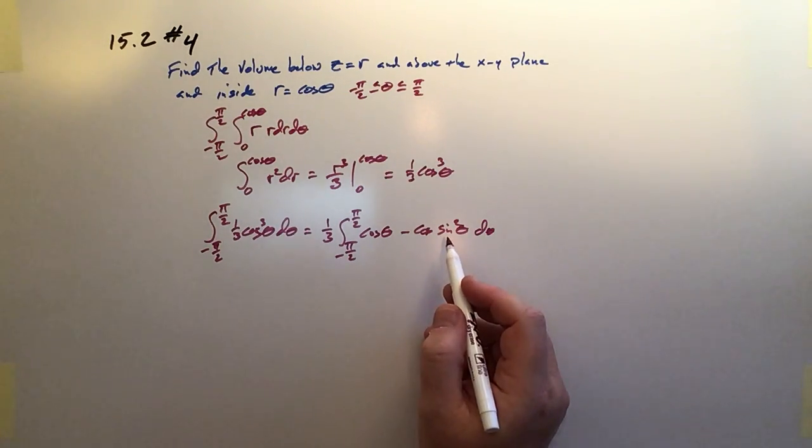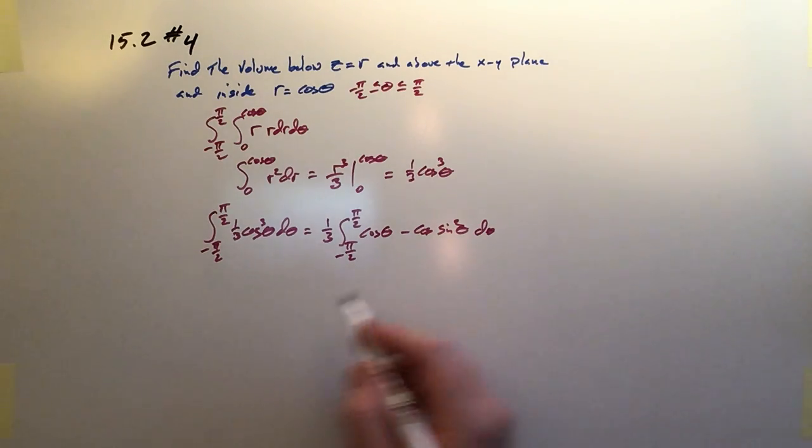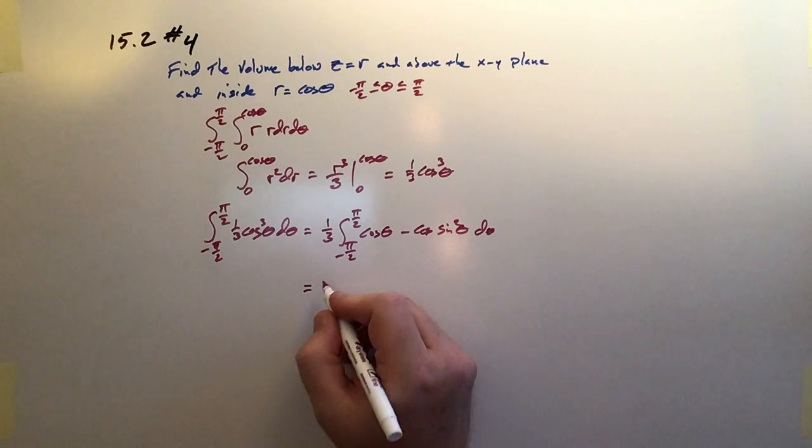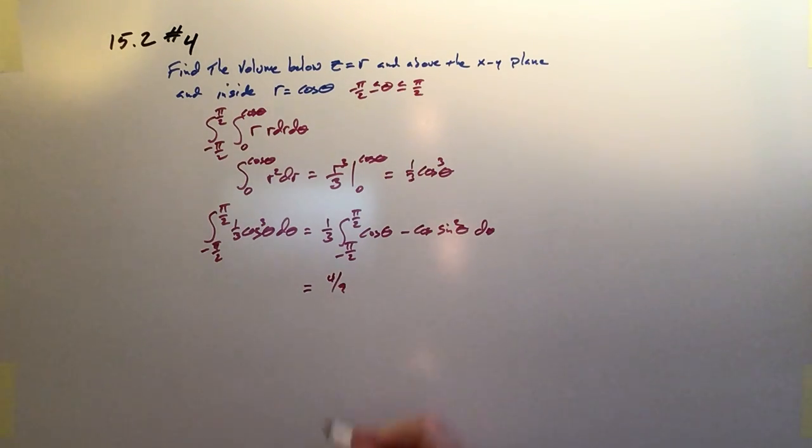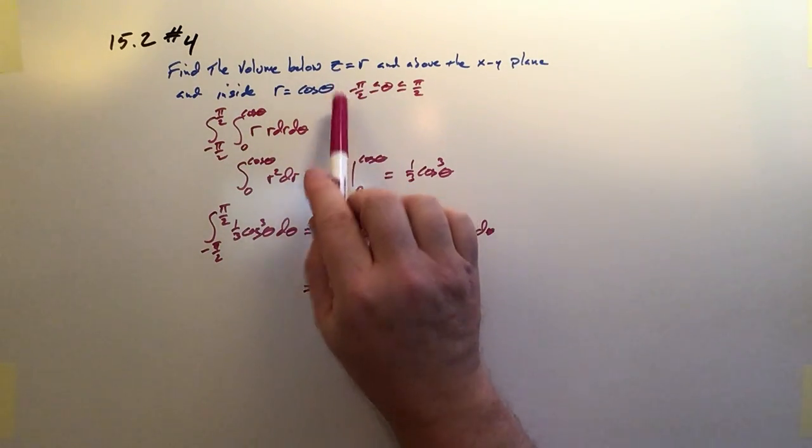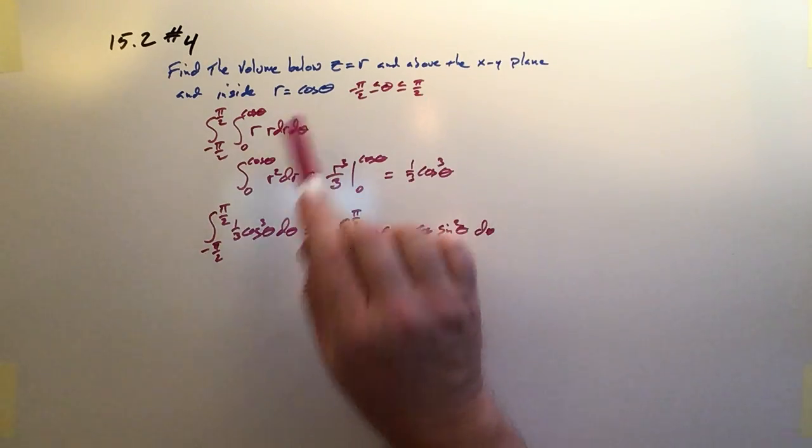And then these are both in a form that integrate pretty easily. So it ends up producing when you're all done doing the integral, plugging in the limits, it's 4 over 9. So that would be the volume of the space between z and then this function within the xy plane.